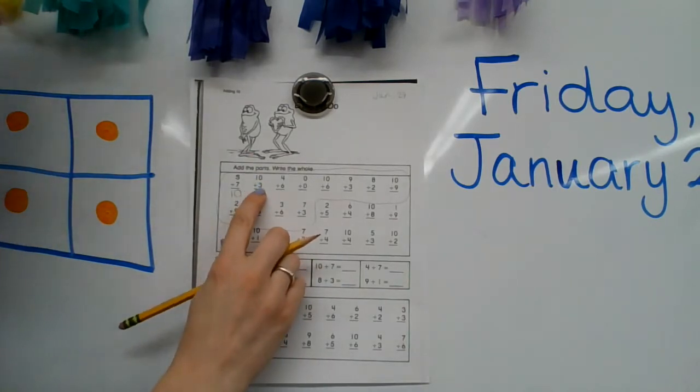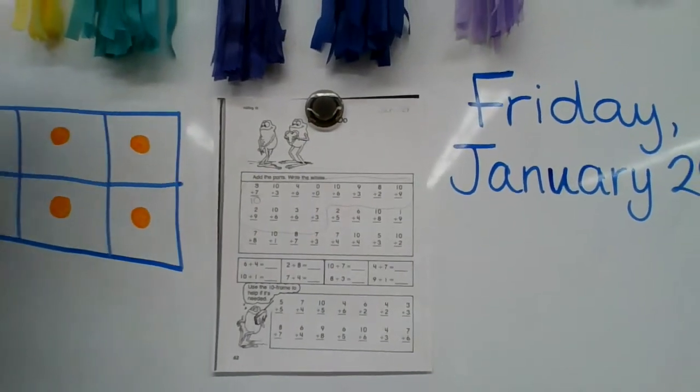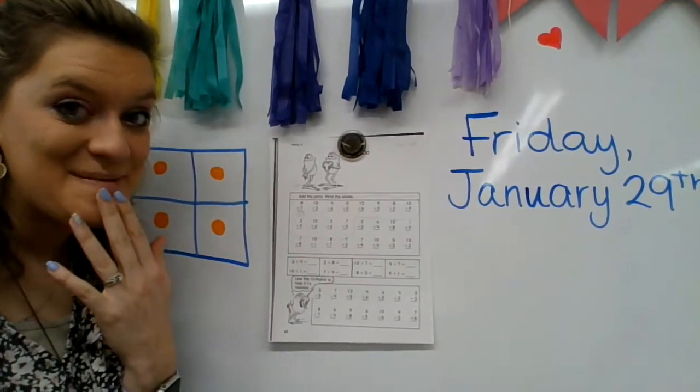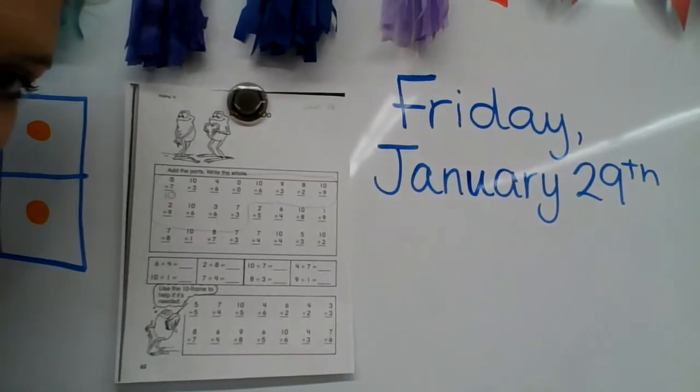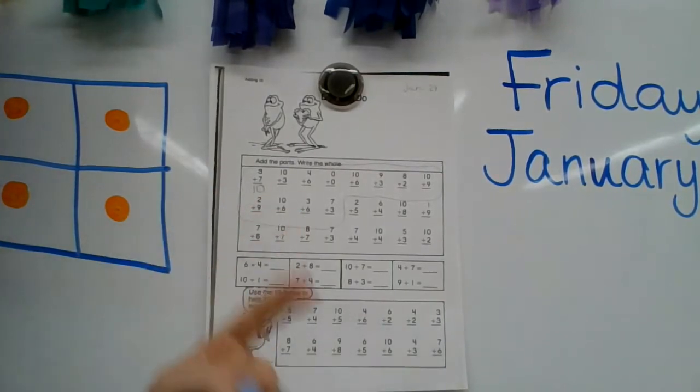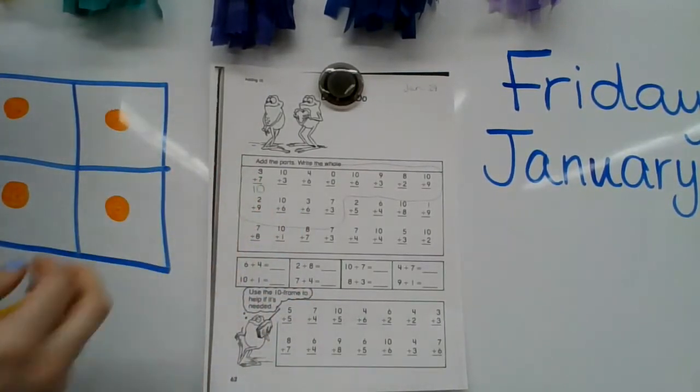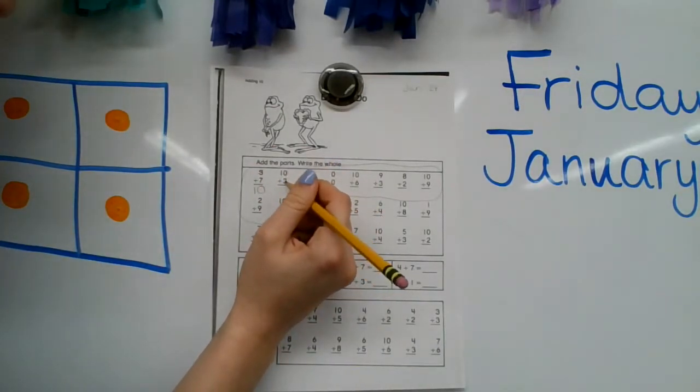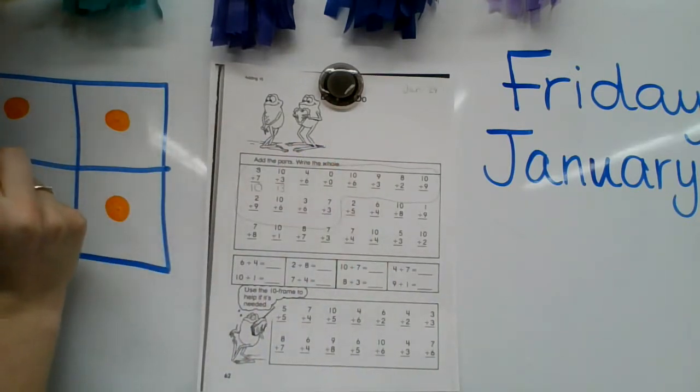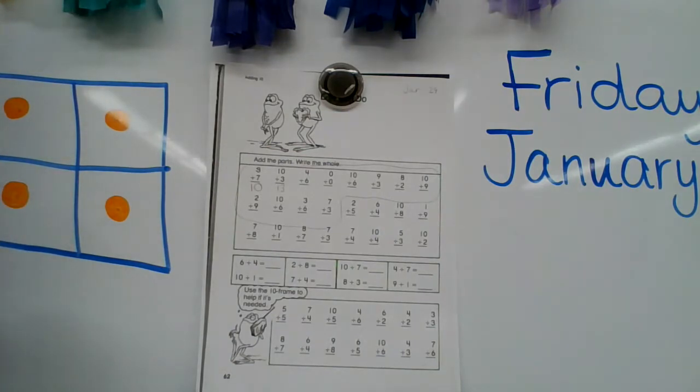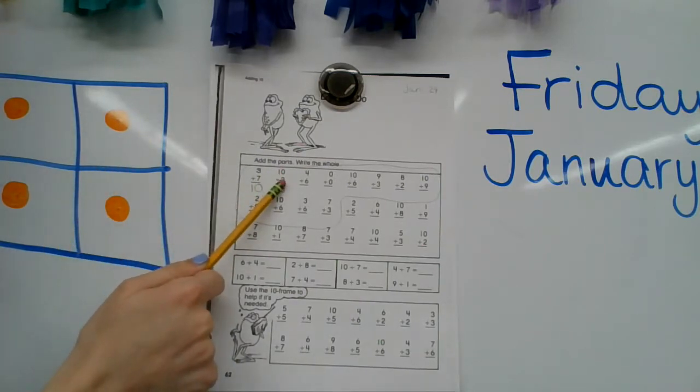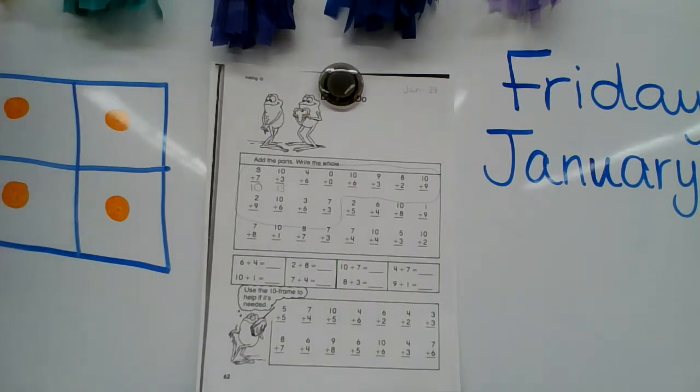All righty. Our next one is 10 plus three. So remember a trick is that when you have a zero and you're adding plus three, it kind of stays the same. We're just going to put a one in front of it, right? 10 plus three. We can also count up and say 10, 11, 12, 13. But you can also know that by looking at it, 10 plus three, you just kind of put the three there instead of the zero. So it's going to be 13. You could also draw a 10 frame and you would have to fill up a whole 10 frame because there's 10 and make a second 10 frame and you'd fill in just three of them and then you would count them all up.